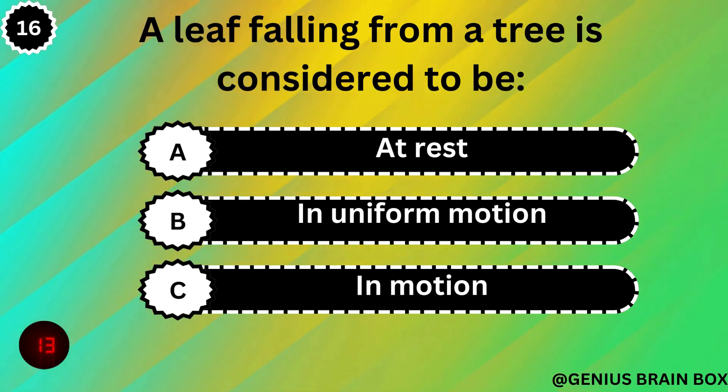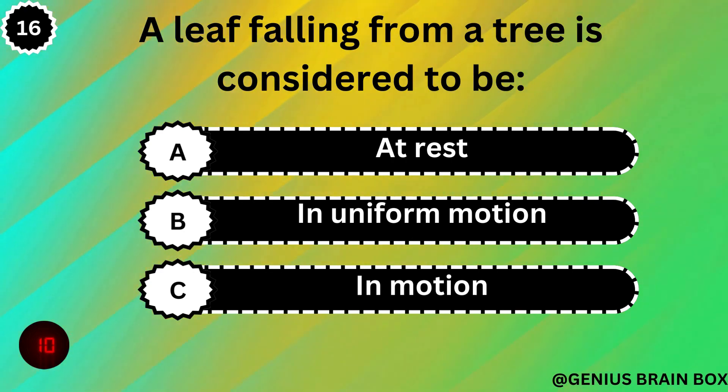A leaf falling from a tree is considered to be: at rest, in uniform motion, or in motion.